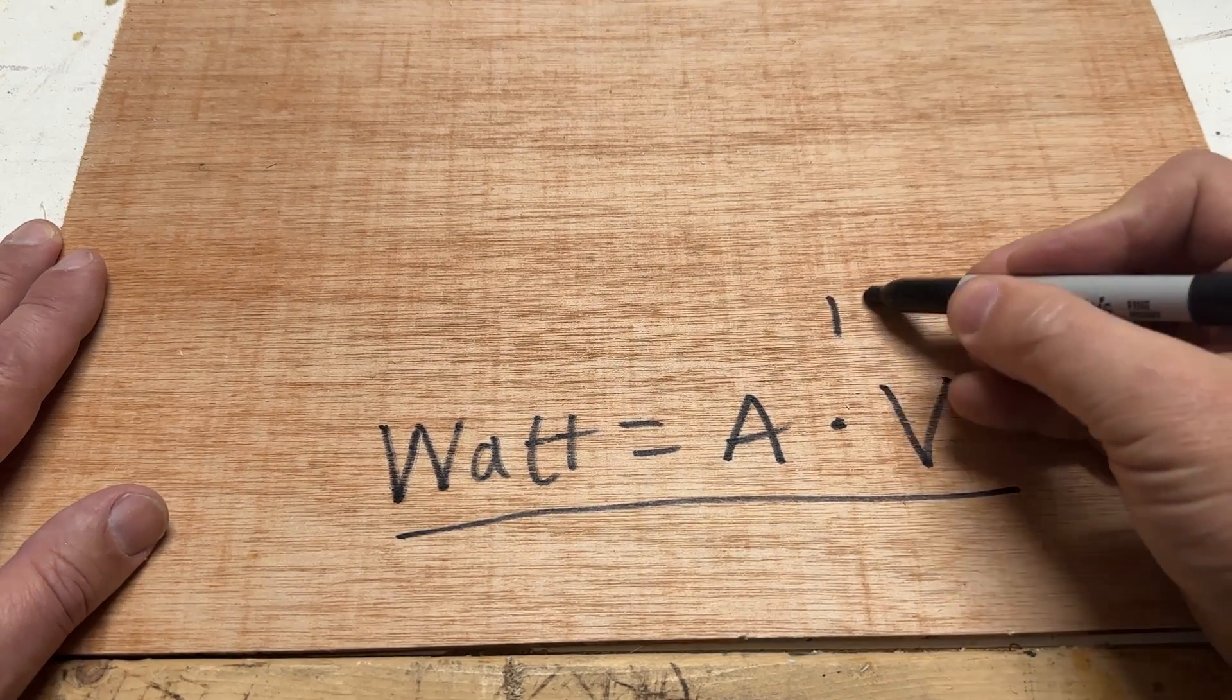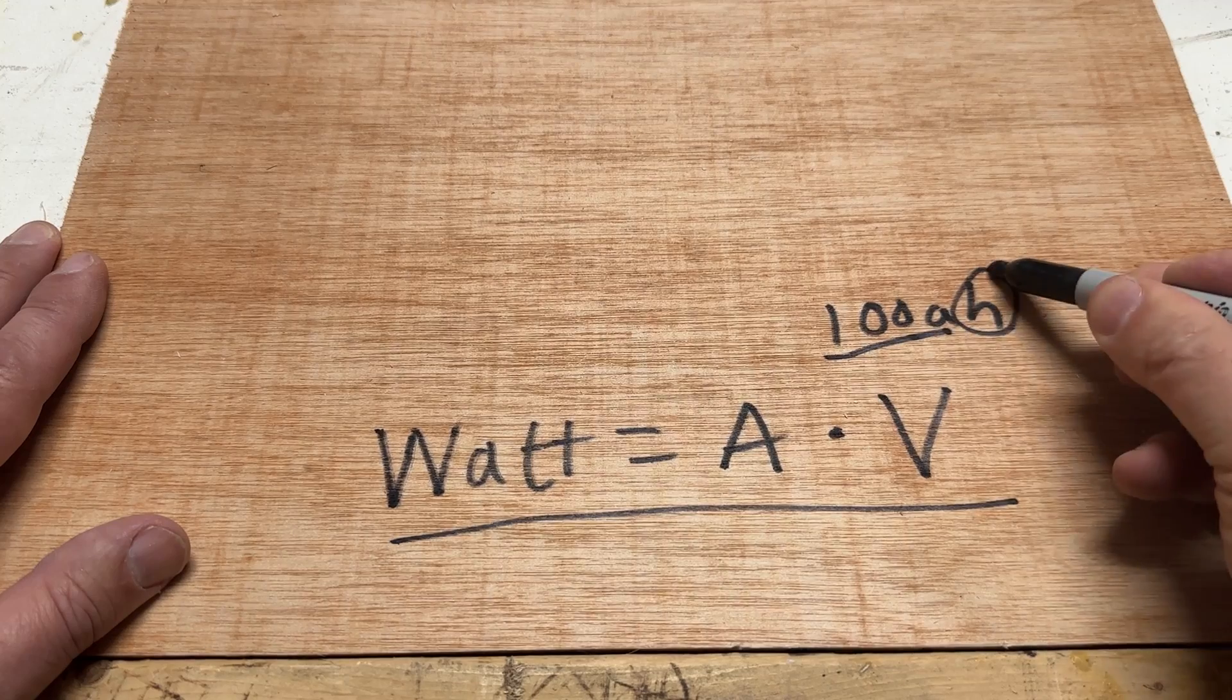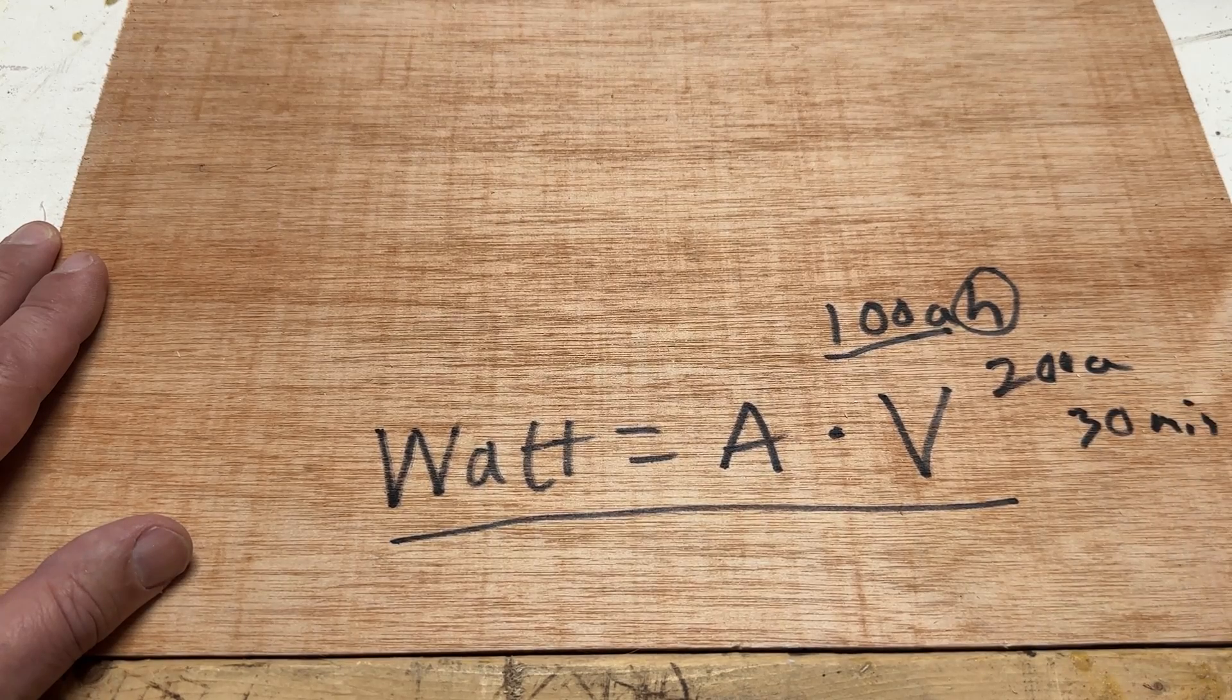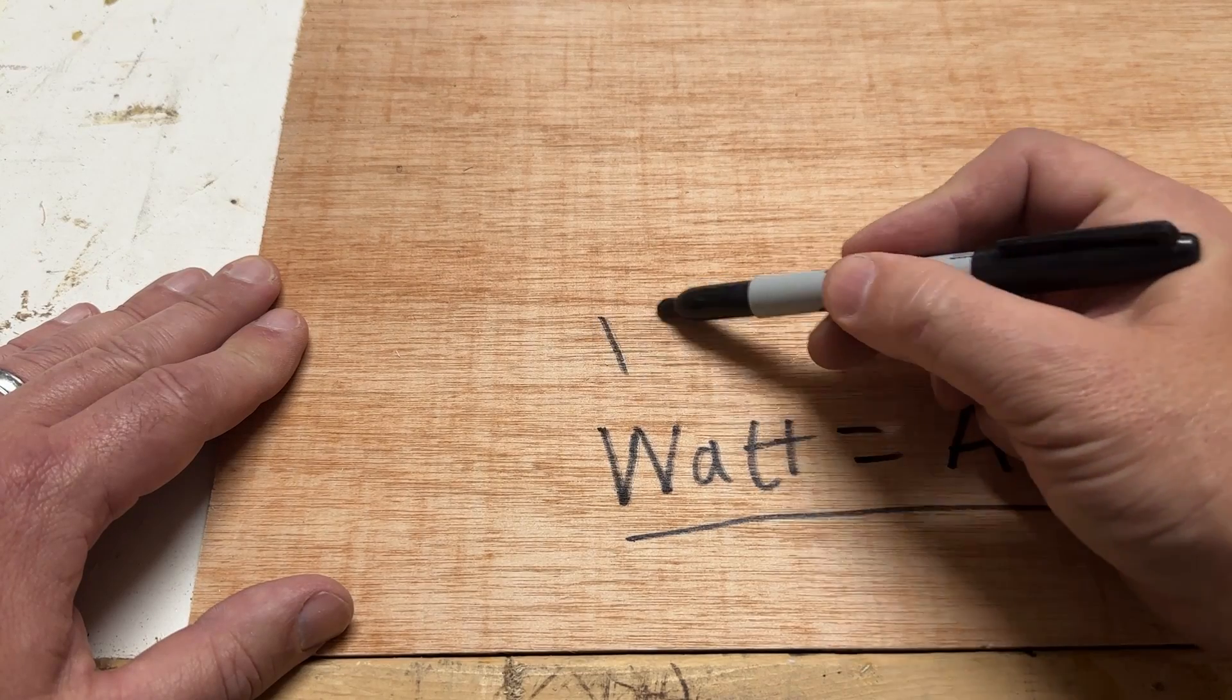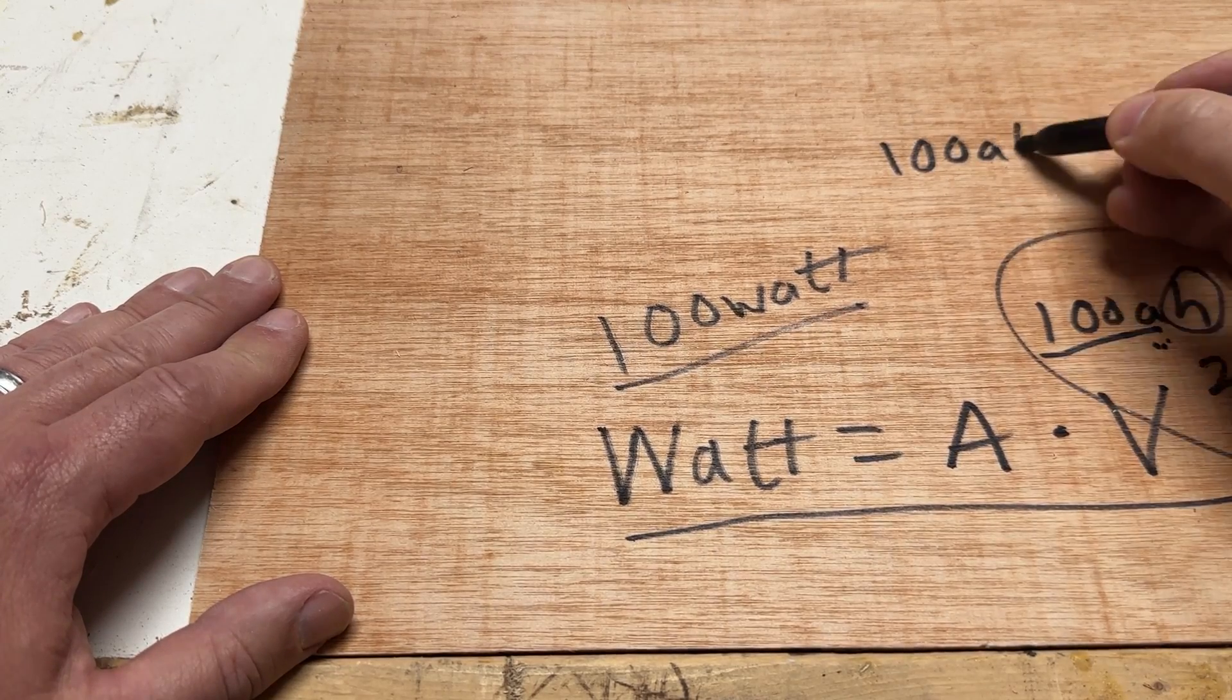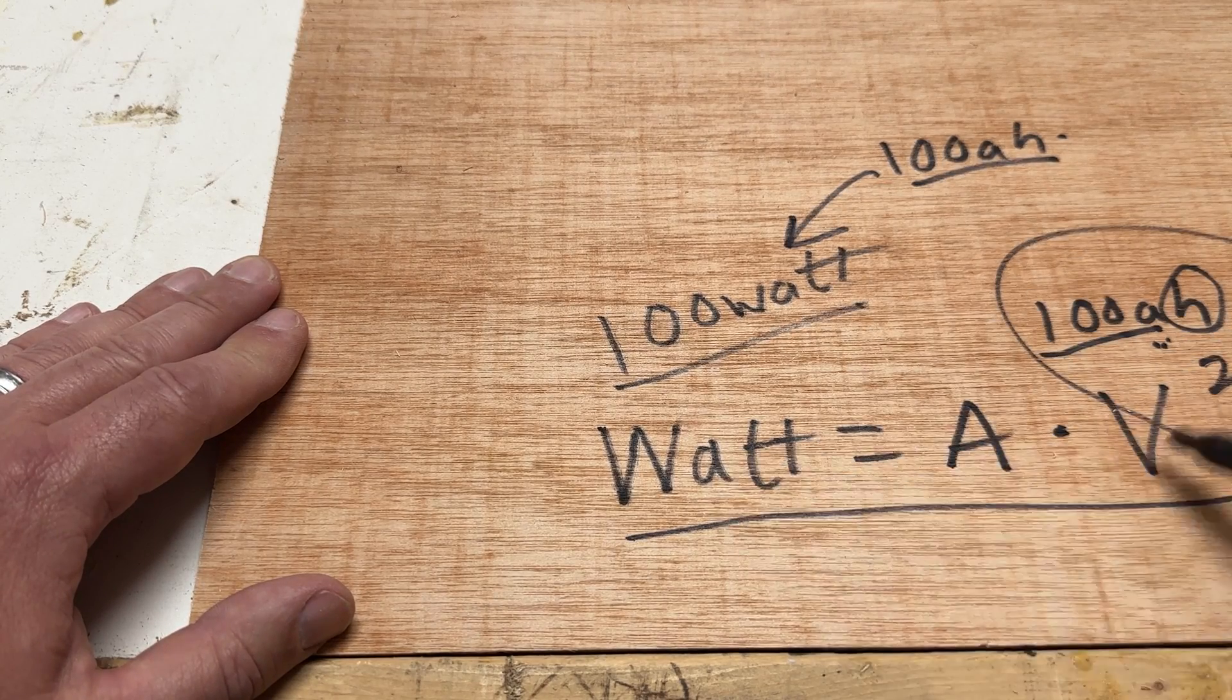This formula can be manipulated in a few different ways to give us a bunch of valuable information. So our battery is 100-amp-hours. This means it can pull 100 amps for one hour. You could also say that you could pull 200 amps for 30 minutes, for a half of that amount of time. What normally we have as a device, let's say we have a light bulb that is a 100-watt light bulb.